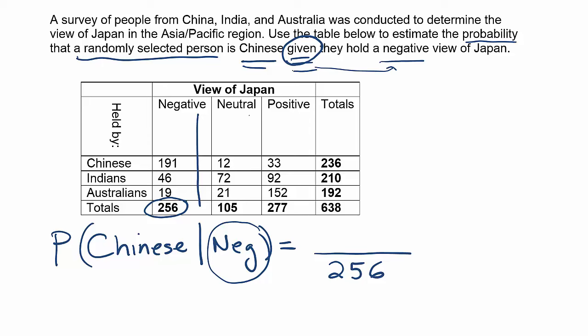From there, in that same column, we don't look outside of that column to solve it using the shortcut approach. We're going to look at which number in that column corresponds to being Chinese.